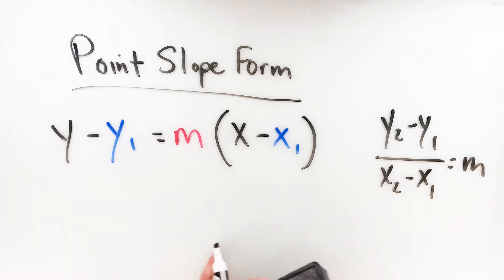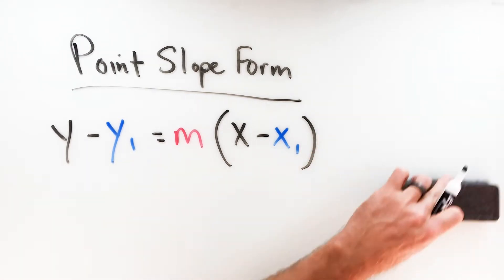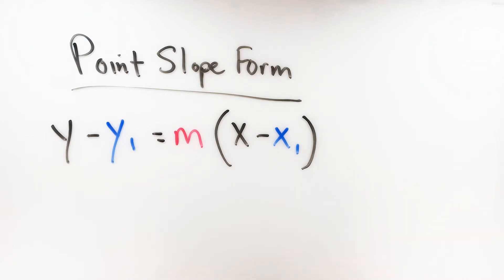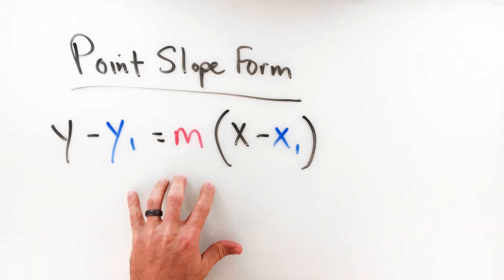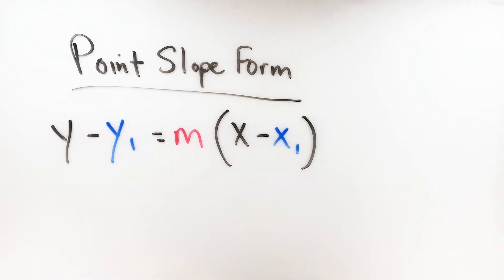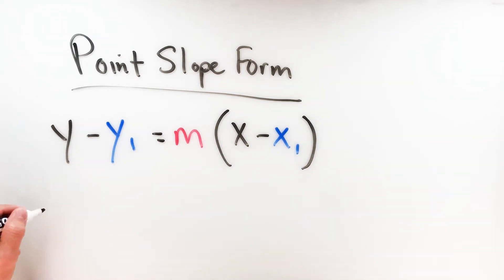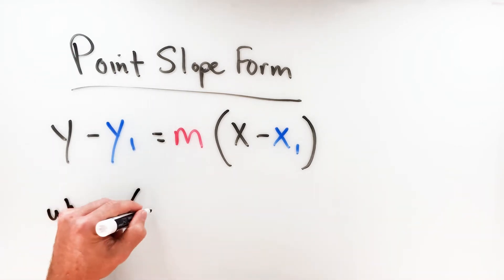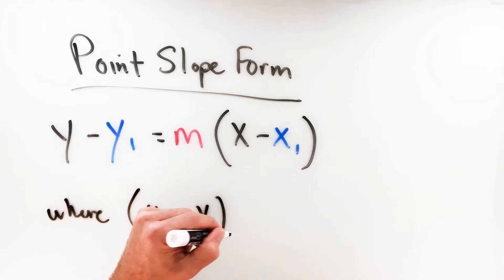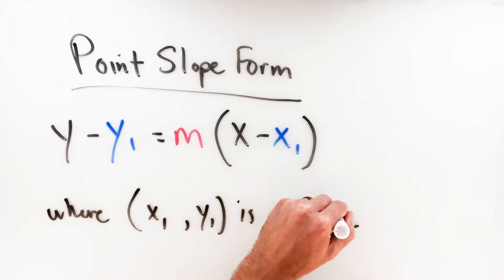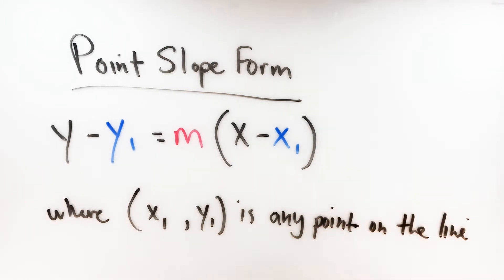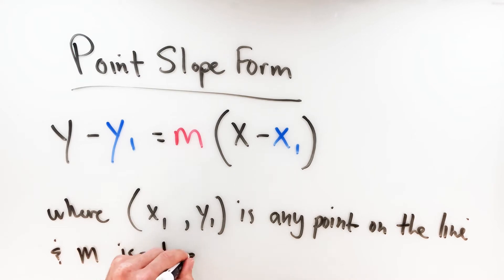To get an equation of a line in point-slope form, there are really only two things you need to know. It is the reason it's called point-slope form — because you need a point on the line and the slope of the line. If you have those two things, you can write the equation of a line in point-slope form. The x1 and y1 are the coordinates of any point on the line, and m represents the slope.